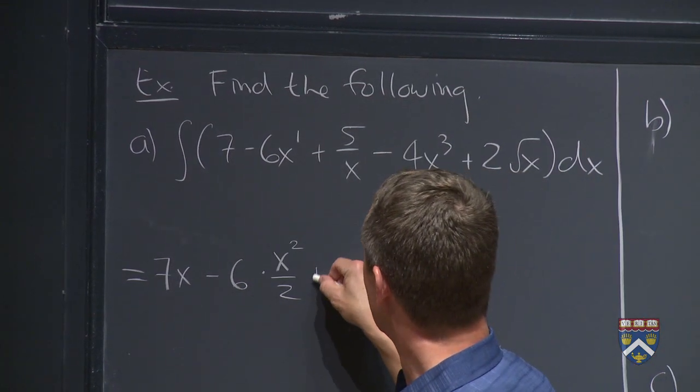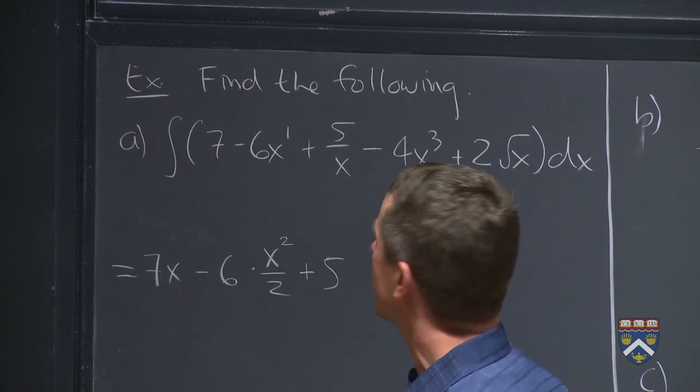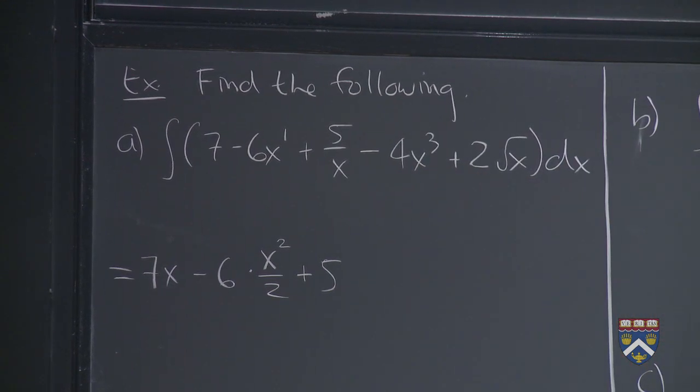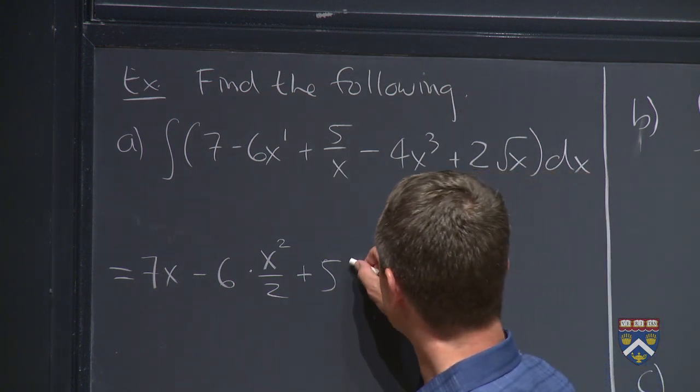We can use that same constant multiple rule for the 5, pull the 5 out front. And now we've got 1 over x. So do you know a function whose derivative is 1 over x? You sure do. Natural log of x.